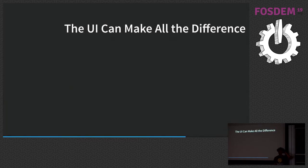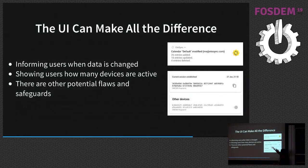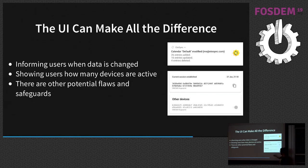The UI can make all the difference. You want to inform users when data has changed — so they can notice if entries were deleted that they didn't delete — alerting them if they may have been compromised. Another important thing is showing users how many devices are active and how many encryption keys exist, as Conversations (the Android XMPP/Jabber client) does well. There are other potential flaws and safeguards — just be aware of them.